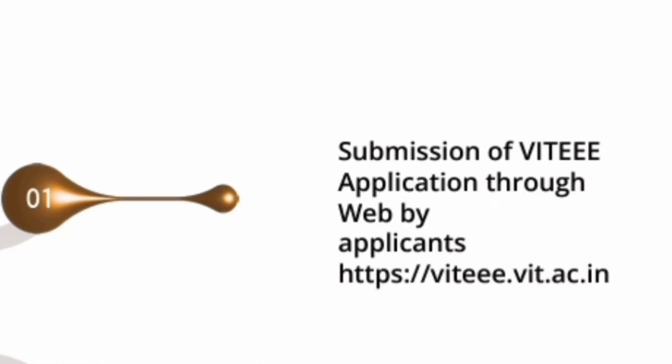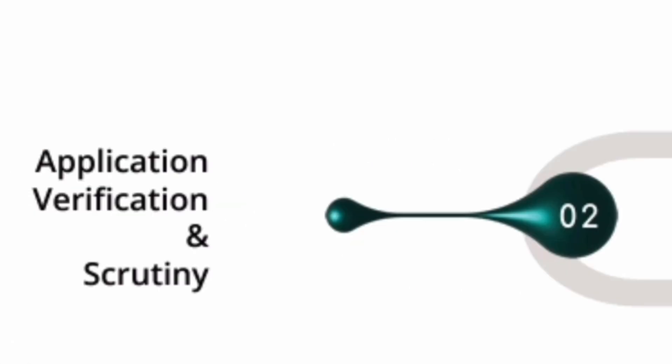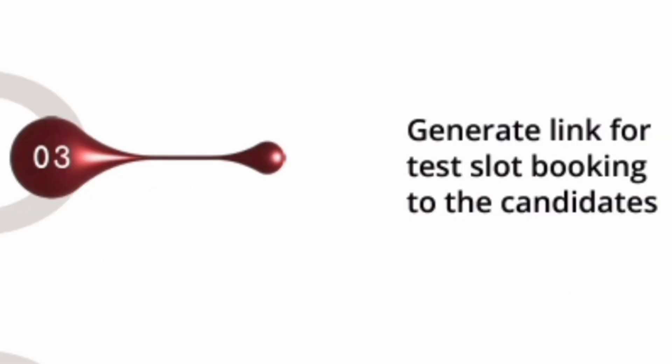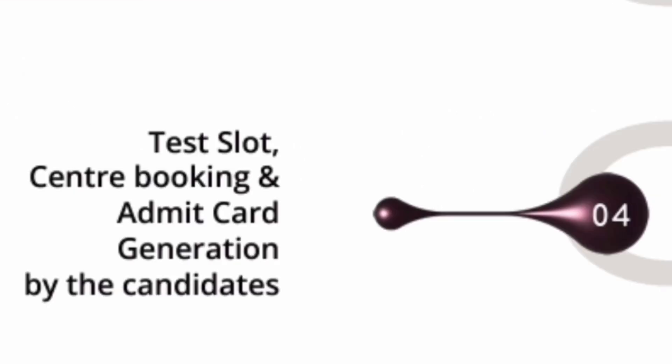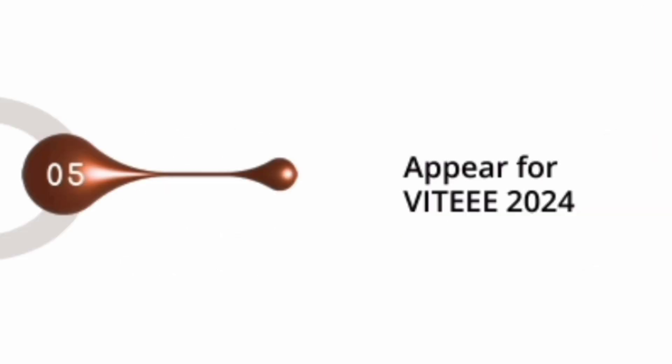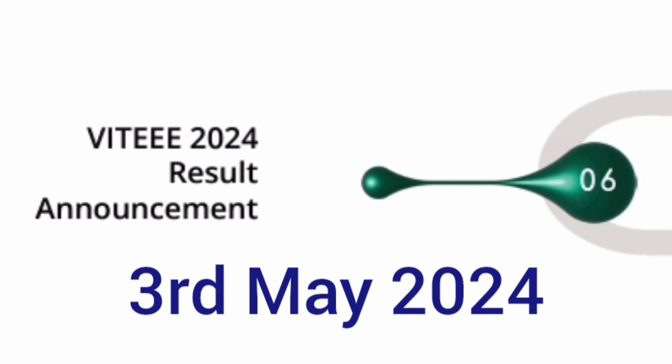The first step was submission of the VIT application form, which is already done. Step two was application verification and scrutiny, already done. Step three was generating the link for test slot booking, already done. Step four was test slot booking, center booking, and admit card generation, which is already done by most students. Step five was to appear for VIT 2024, and most students have already appeared, while some will appear in the next three to four days.